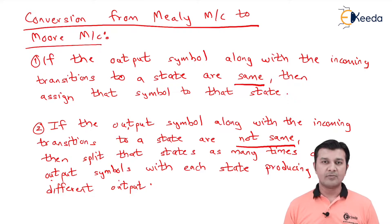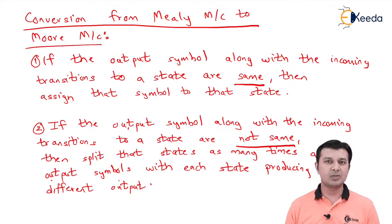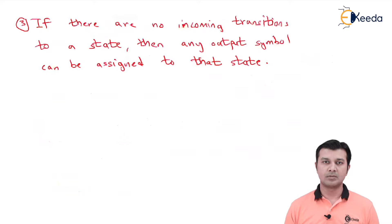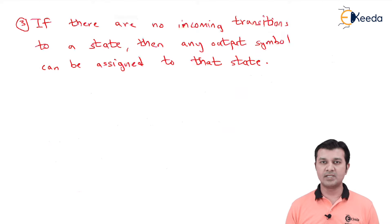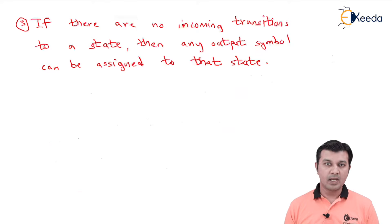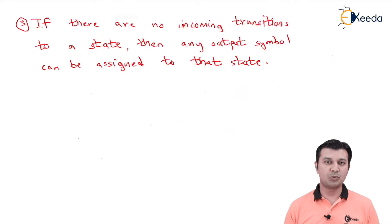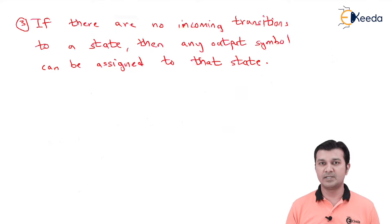So step one was a simple point. Step two says we have to split the state. Step three says if there are no incoming transitions to a state, then any output symbol can be assigned to that state — specifically, this applies to the start state. So we have: same outputs → assign; different outputs → split; no incoming transitions → assign any output.